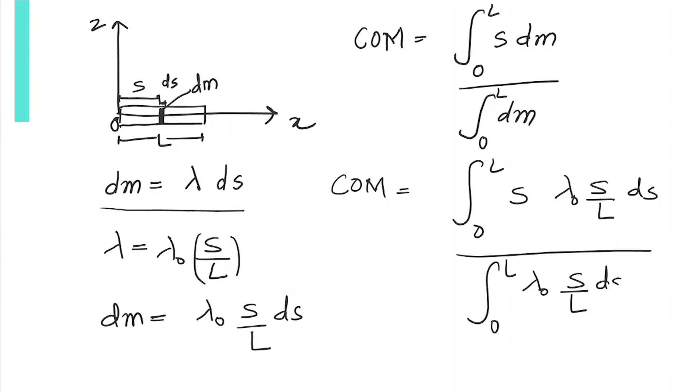The COM equals the integral from 0 to L of λ₀/L times s² ds, divided by the integral from 0 to L of λ₀/L times s ds. λ₀/L are constants, so we take them out. We're left with s² ds in the numerator and s ds in the denominator, so λ₀/L cancels out.